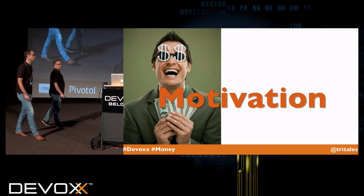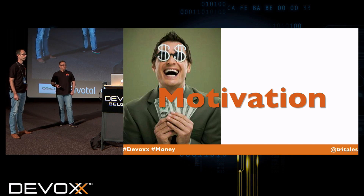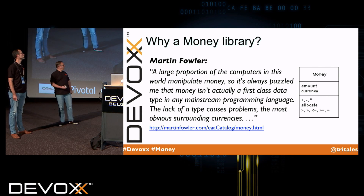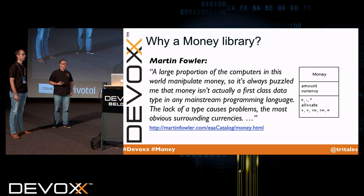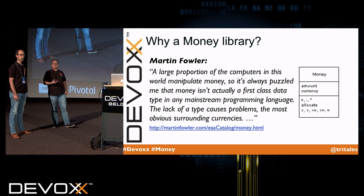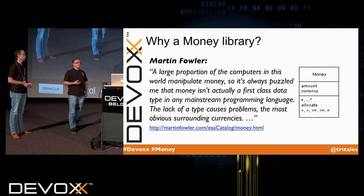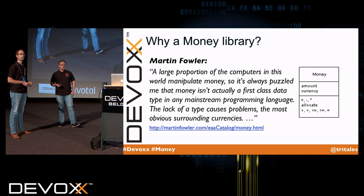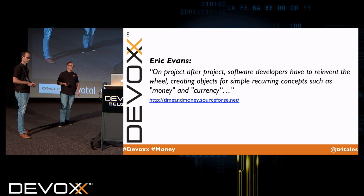Why talk about money? Well, before the JSR, we didn't really have a way to deal with money in Java. As a matter of fact, most applications have to deal with money, but the main programming languages don't support a first-class data type for it. And because there's no standard, we as developers keep on reinventing the wheel over and over again.